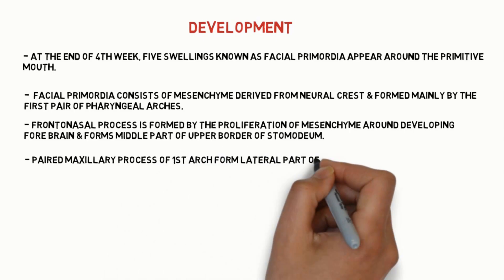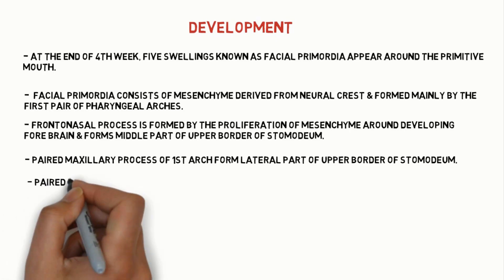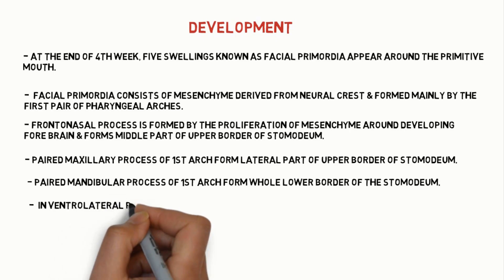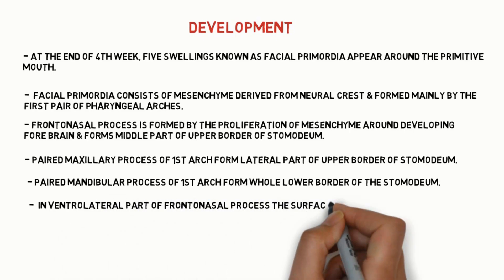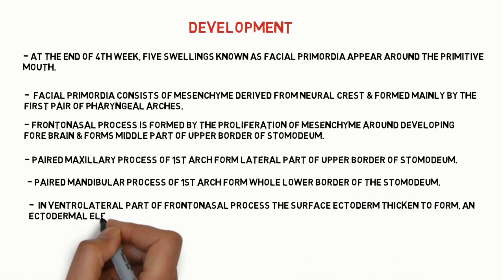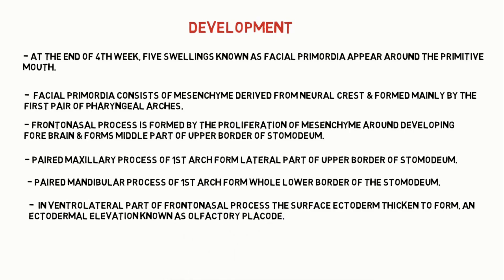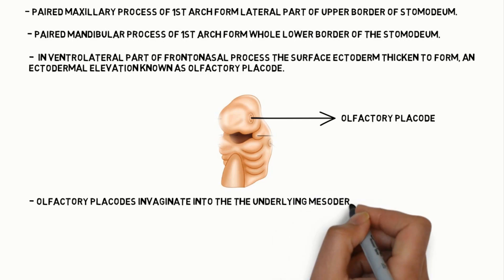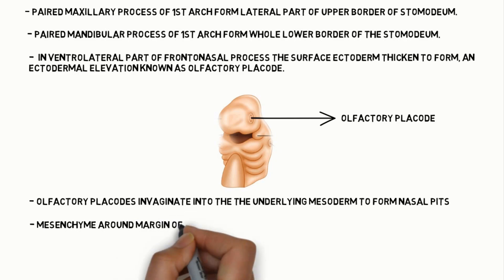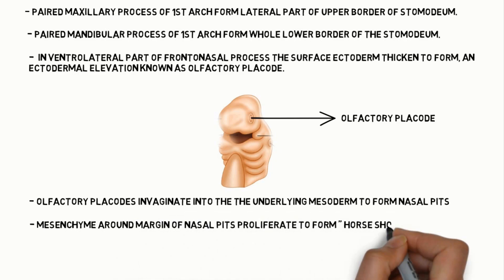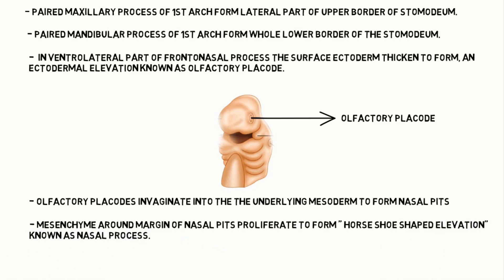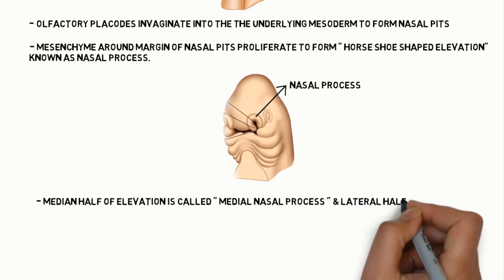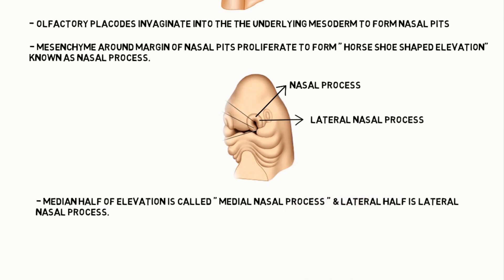The paired mandibular processes of the first arch form the whole lower border of the stomodeum. In the ventrolateral part of the frontal nasal process, the surface ectoderm thickens to form an ectodermal elevation known as the olfactory placode. The olfactory placode invaginates into the underlying mesoderm to form nasal pits. The mesenchyme around the margins of the nasal pits proliferates to form horseshoe-shaped elevations known as nasal processes. The medial half of the elevation is called the median nasal process and the lateral half is the lateral nasal process.